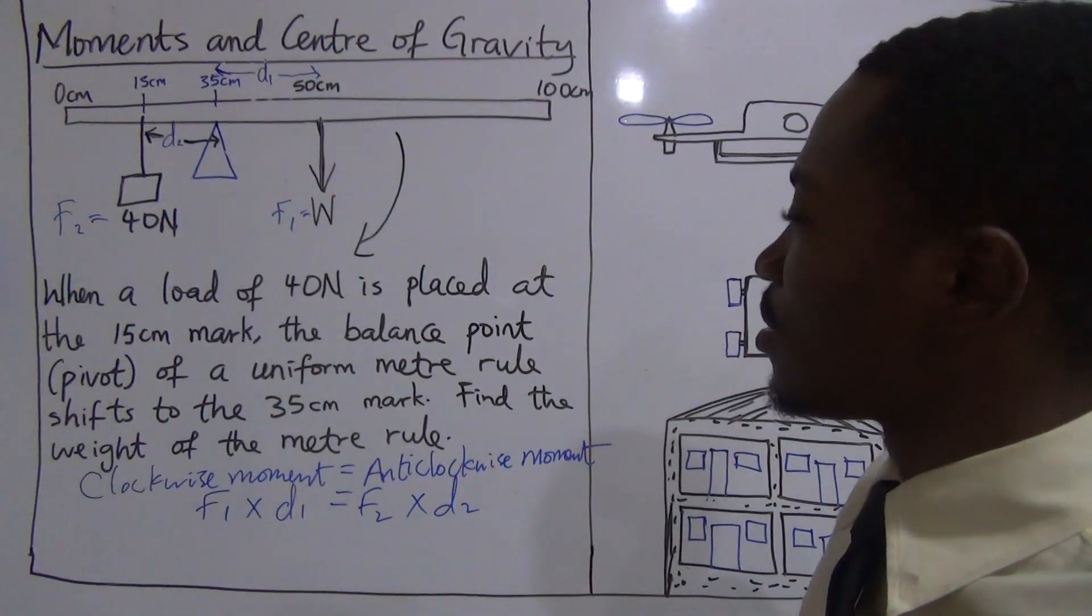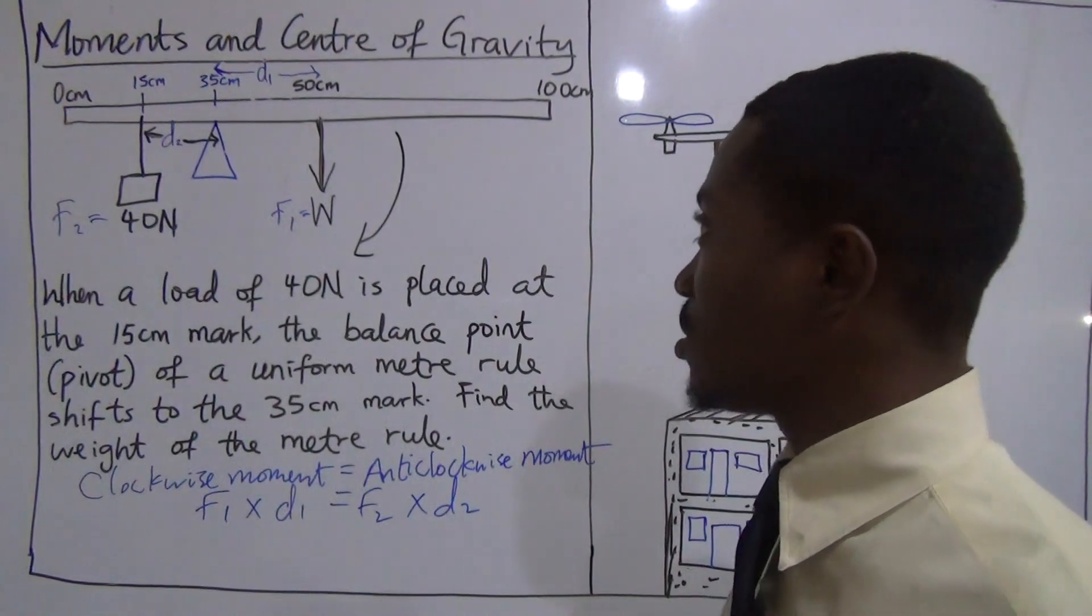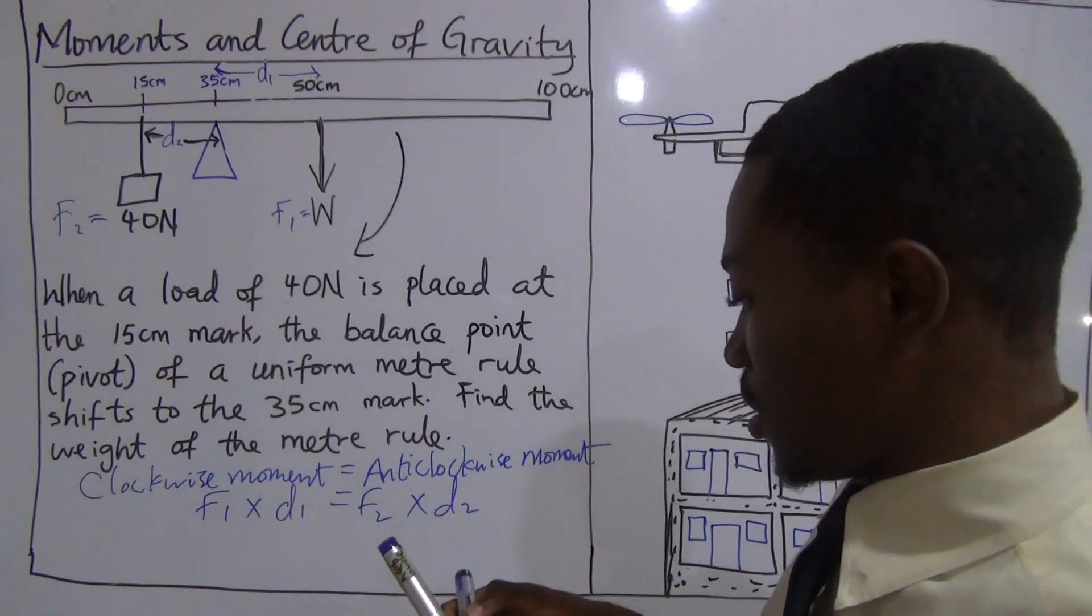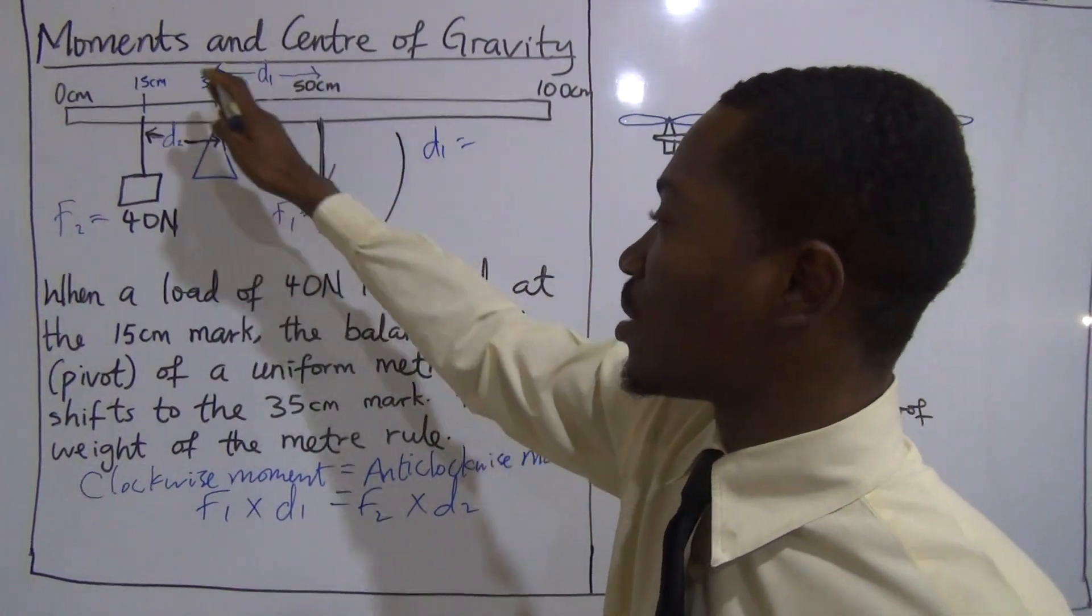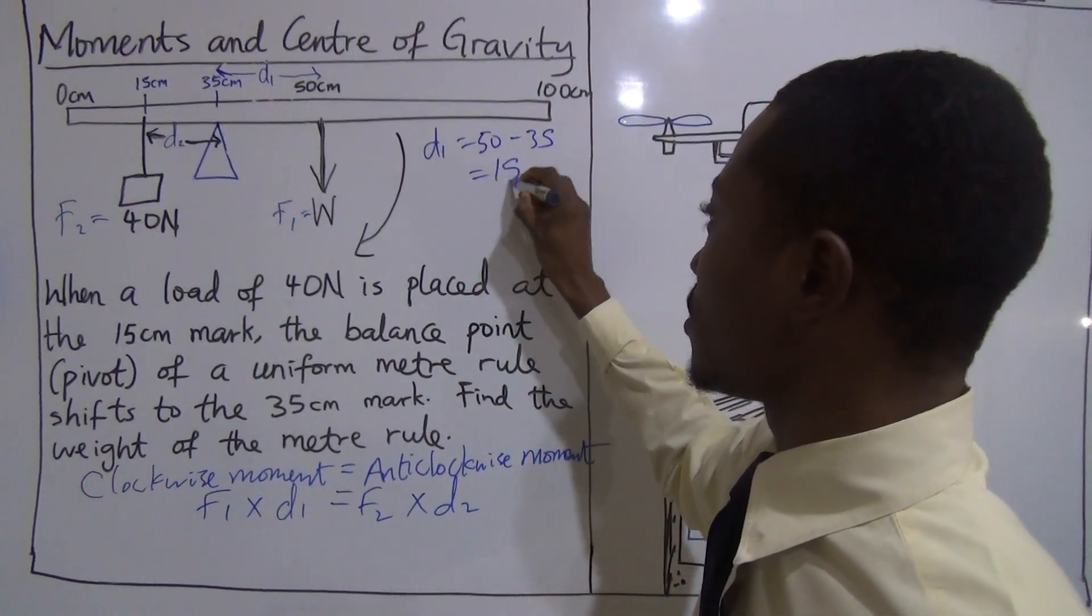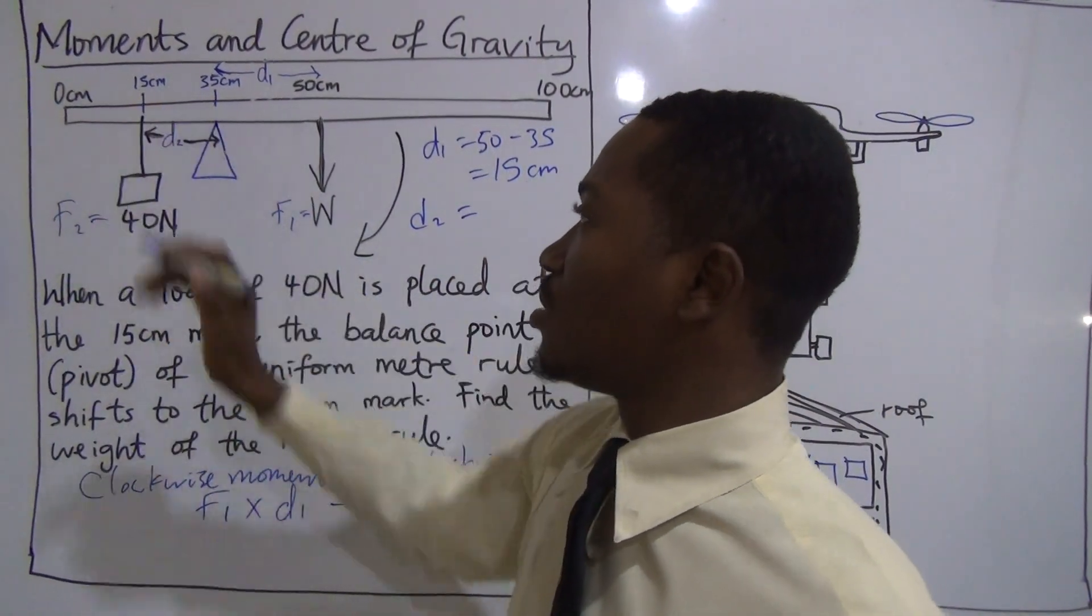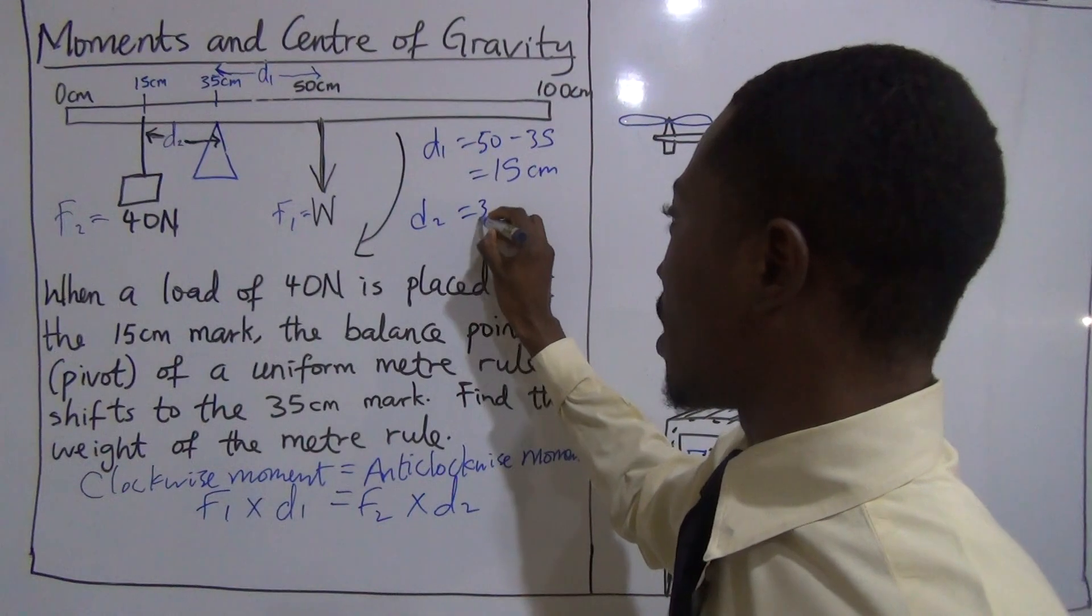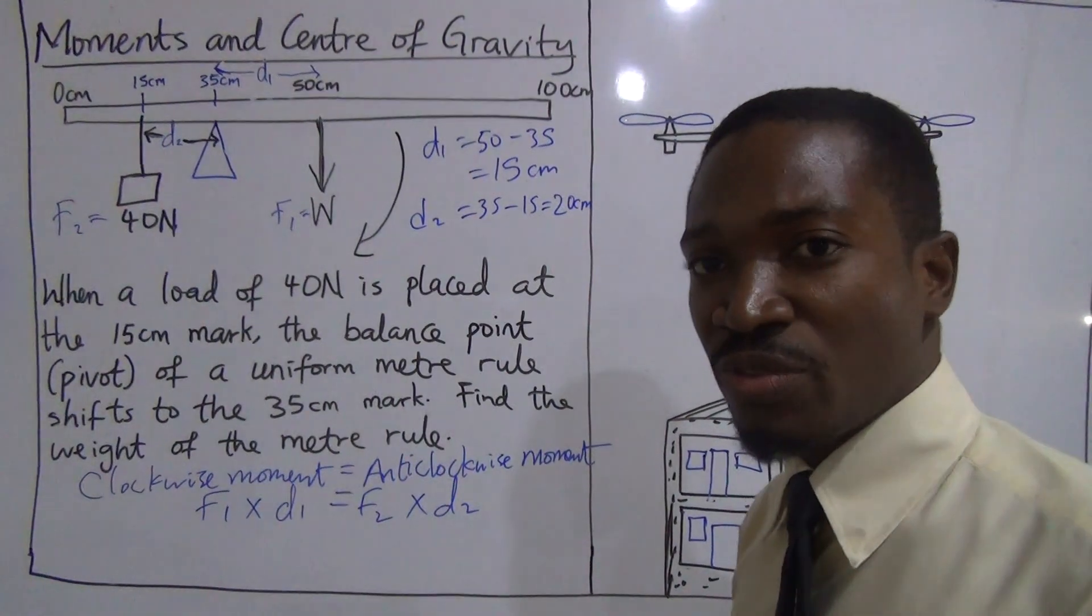What is F1? F1 is the weight W. What is D1? D1 is distance from here to here, from the force to the pivot. So you do 50 minus 35. So your D1 is 15 centimeters. What's D2? D2 is distance from 35 to the 15 centimeters mark. That's distance between the force F2 and the pivot. That would be 35 minus 15. That gives you 20 centimeters.